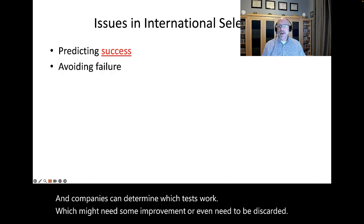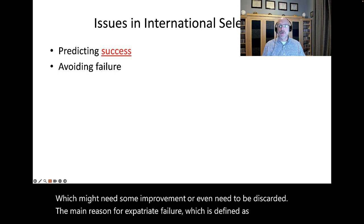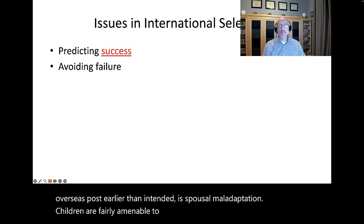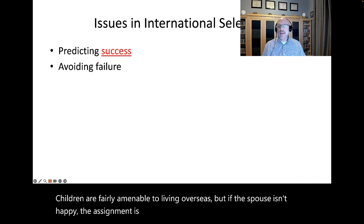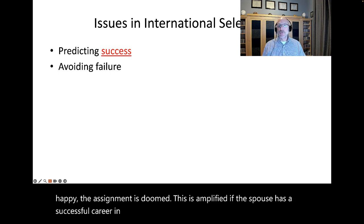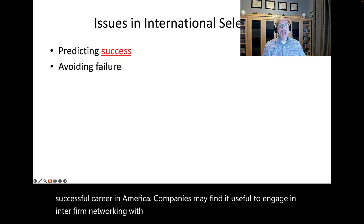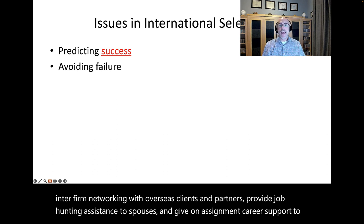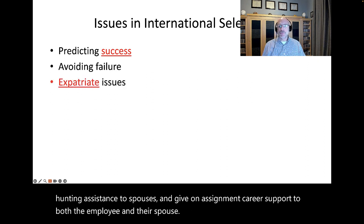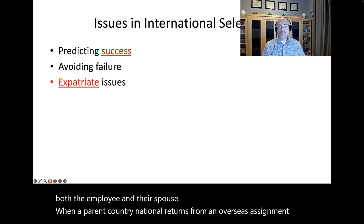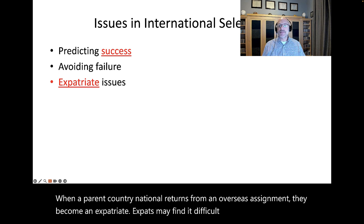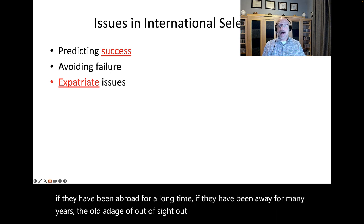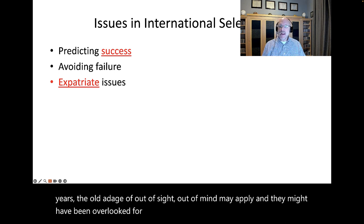The main reason for expatriate failure, which is defined as leaving an overseas post earlier than intended, is spousal maladaptation. Children are fairly amenable to living overseas, but if the spouse isn't happy, the assignment is doomed. This is amplified if the spouse has a successful career in America. Companies may find it useful to engage in inter-firm networking with overseas clients and partners, provide job hunting assistance to spouses, and give on-assignment career support to both the employee and their spouse. When a parent country national returns from an overseas assignment, they become an expatriate. Expats may find it difficult to re-assimilate in the U.S. if they have been abroad for a long time. If they have been away for many years, the old adage of out-of-sight, out-of-mind may apply.